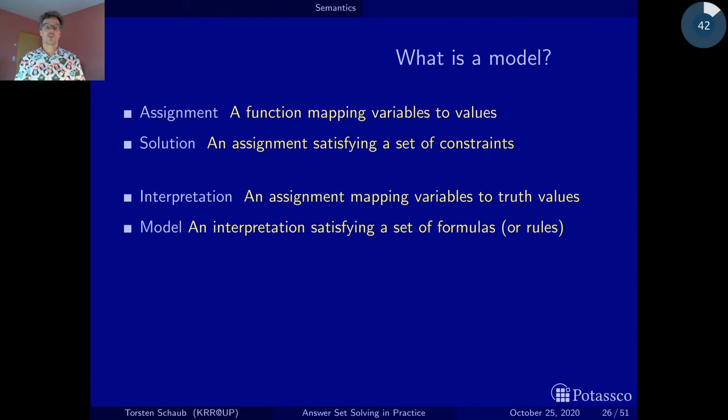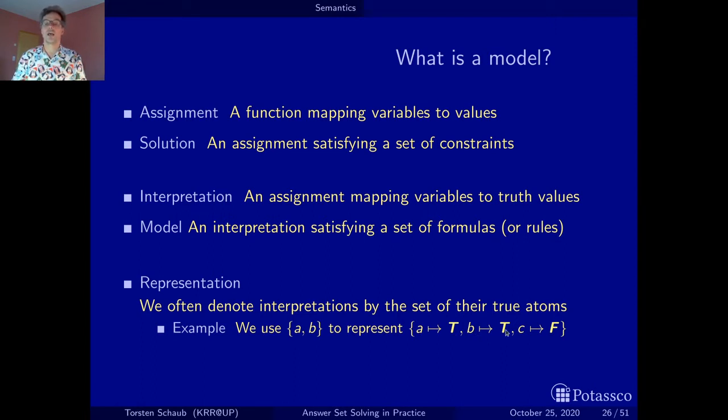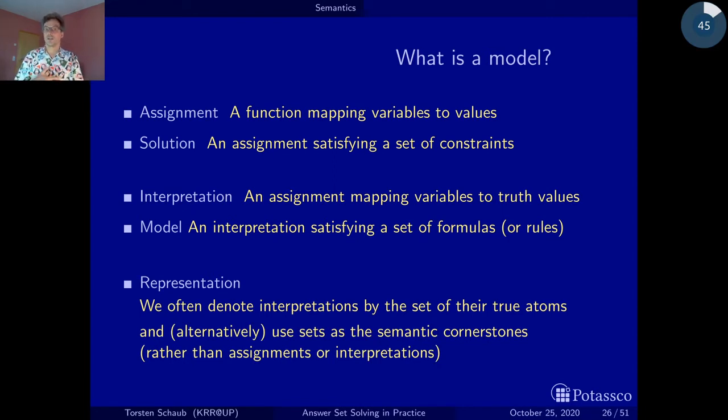We've seen that interpretations and models are special cases of assignments and solutions. The good news is, we don't have to become very technical on that. In fact, we can make our life much simpler by using sets for representing interpretations. In the logical setting, we represent an interpretation by the set of the atoms that have been assigned the truth value true. So this is our interpretation where a and b become truth value true. We represent this simply by the set that contains a and b, with the convention that these are true, and all atoms left out, in our case c, are assigned false.